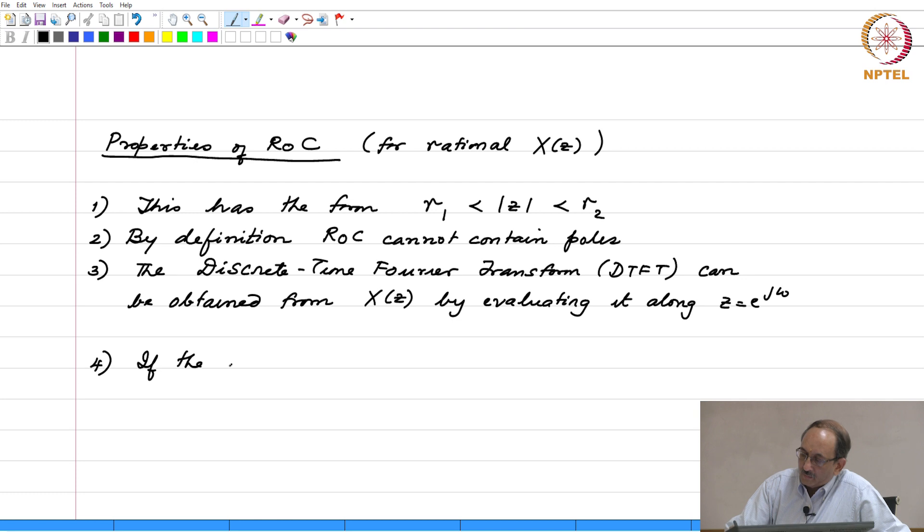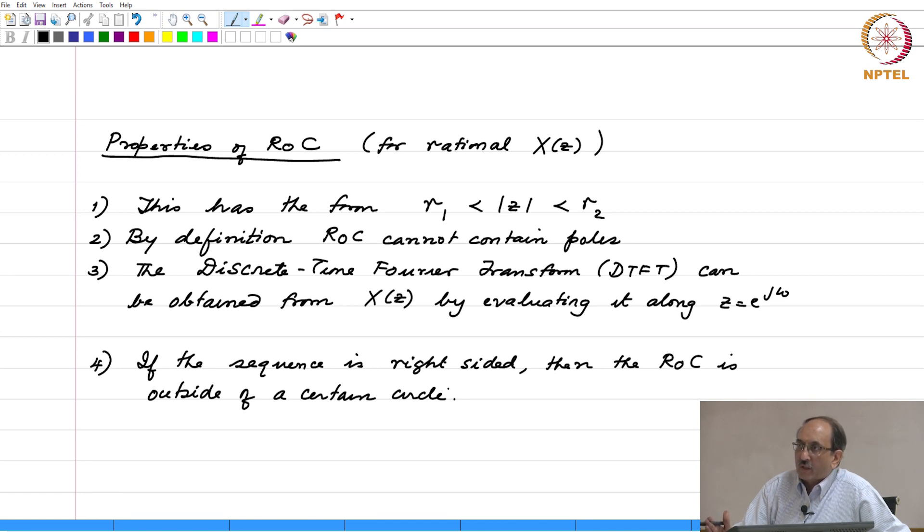If the sequence is right sided, then the ROC is outside of a certain circle. This is the counterpart of what is happening in the Laplace case. If the function f of t is right sided, then the bilateral Laplace transform, the region of convergence was to the right of a certain vertical line.